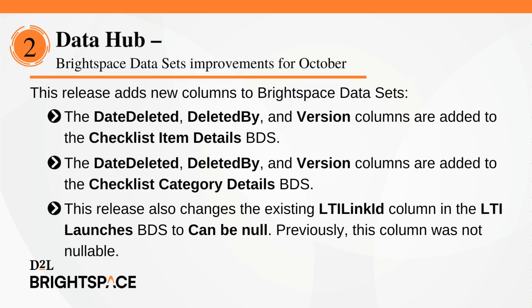To help users better understand deletions and changes in checklist tool data sets, this feature adds the following new columns to Brightspace data sets: the Date Deleted, Deleted By, and Version columns to the Checklist Item Details BDS; and the Date Deleted, Deleted By, and Version columns to the Checklist Category Details BDS. This release also changes the existing LTI Link ID column in the LTI Launches BDS so it can be null.